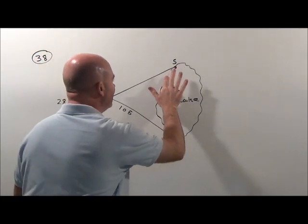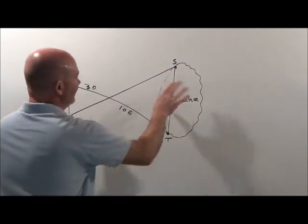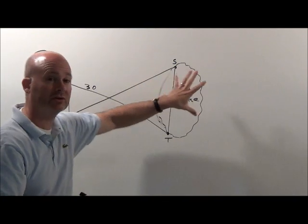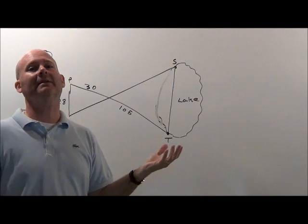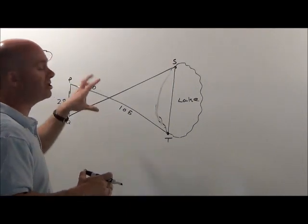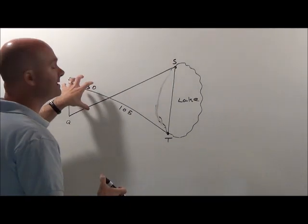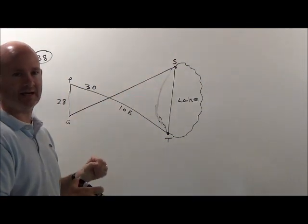We don't really need this here. It's just trying to confuse you so that you're not sure what's going on. But notice, small triangle, big triangle. That tells me it's got to be similar figures. So I've just got to set up a proportion between this guy's sides and that guy's sides.